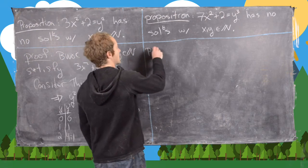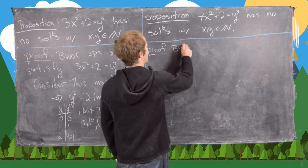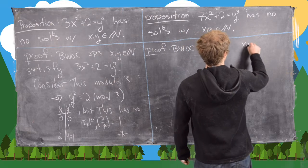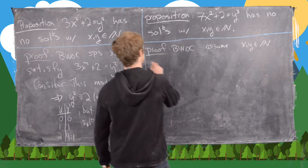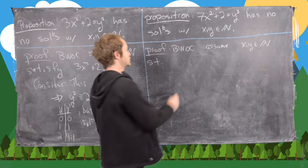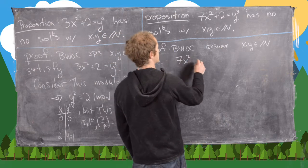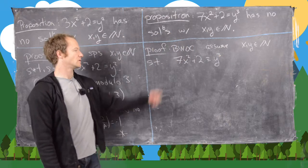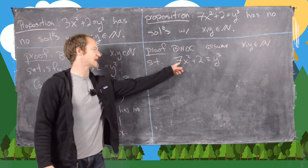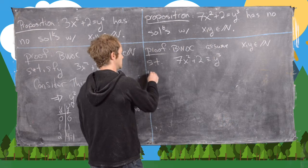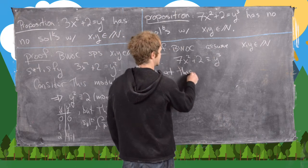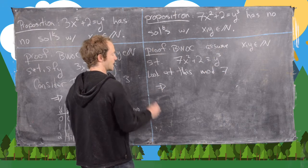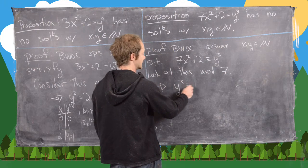By way of contradiction, assume that we have x and y natural numbers such that 7x² + 2 = y³. Now what we'll do is consider this mod 7 to eliminate the first term, and that gives us the congruence y³ ≡ 2 (mod 7).